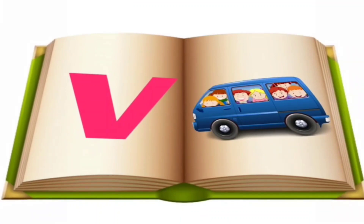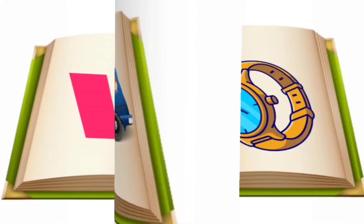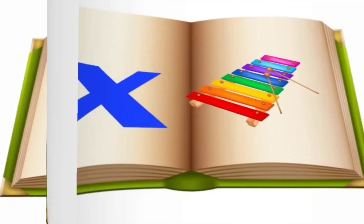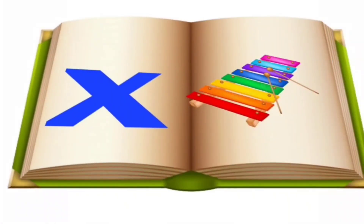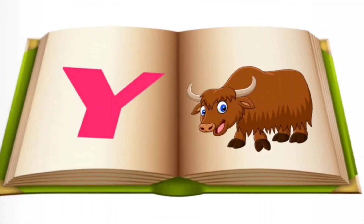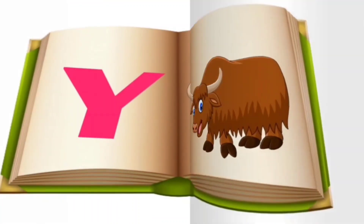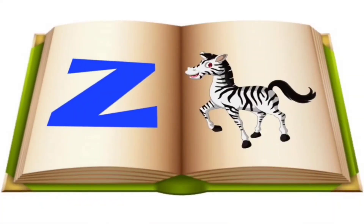V for van, W for watch, X for telephone, Y for jack, D for zebra. Bye-bye.